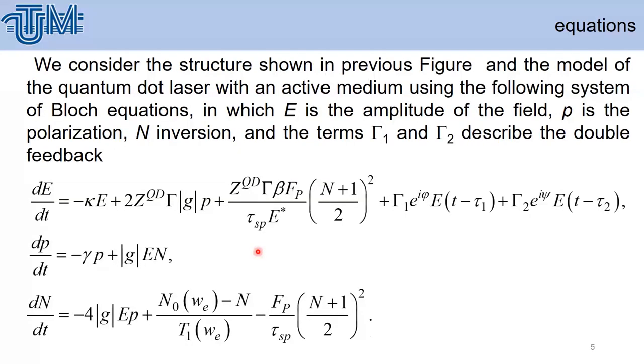We consider the structure shown in the previous figure and the model of the quantum dot laser with active medium using the following system of Bloch equations, in which E is the amplitude of the field, p is the polarization, N is the inversion. Terms Γ₁ and Γ₂ describe the double feedback.